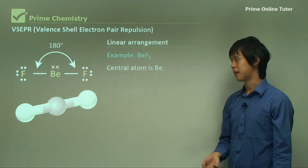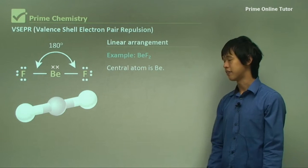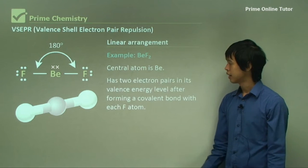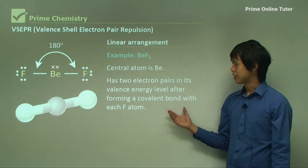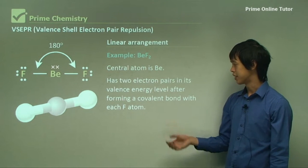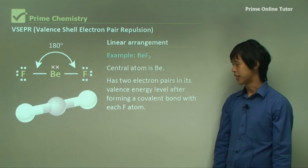So the example, as I mentioned before, is BeF2. The central atom is beryllium. It has two electron pairs in its valence energy level after forming a covalent bond with each F atom.